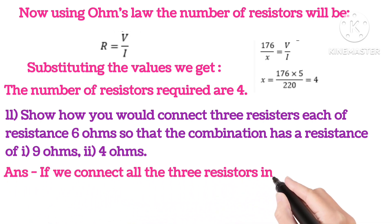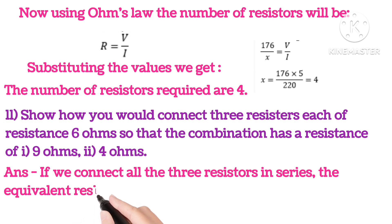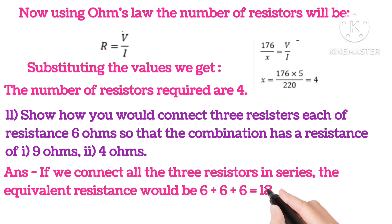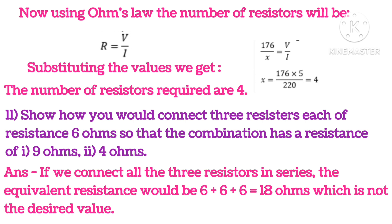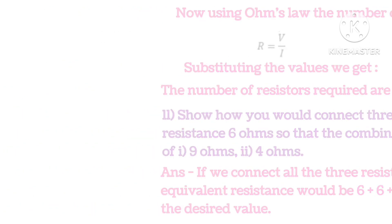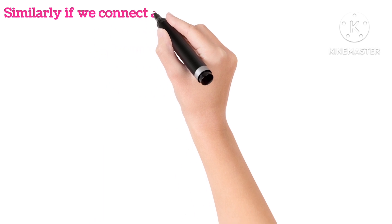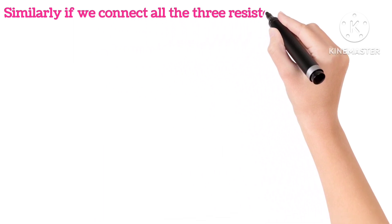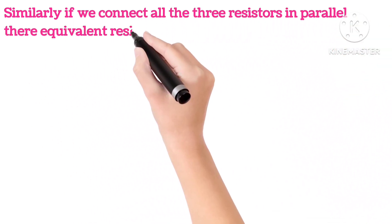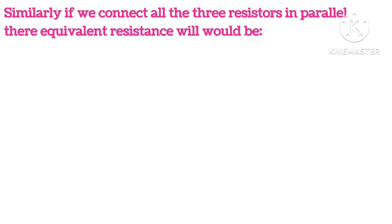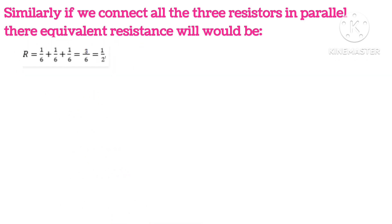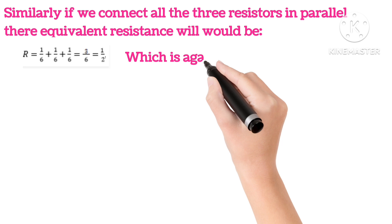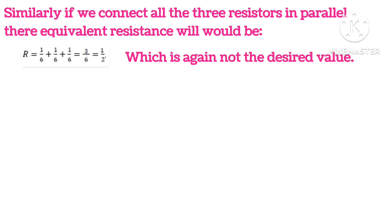So if we connect all the 3 resistors in series, the equivalent resistance will be 6 plus 6, that is 18 ohm, which is not the desired value because we want 9. Similarly, if we connect all the 3 resistors in parallel, then their equivalent resistance would be 1 by 2, which is again not the desired value.